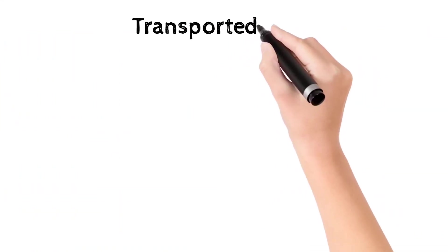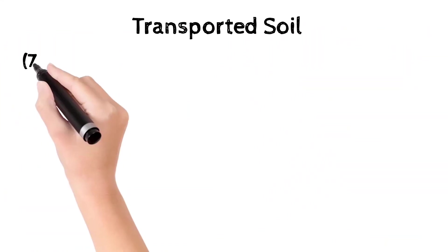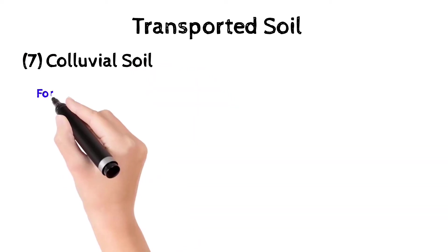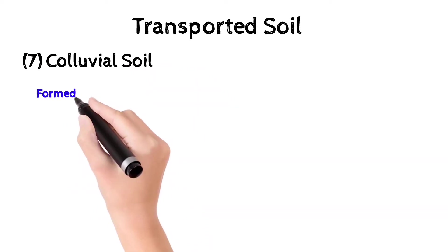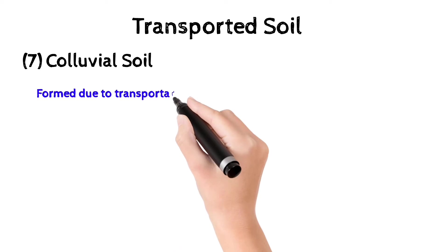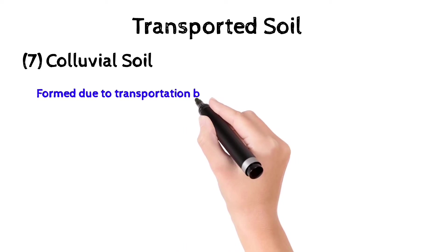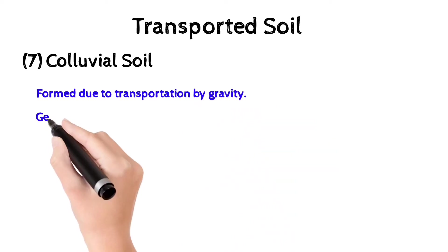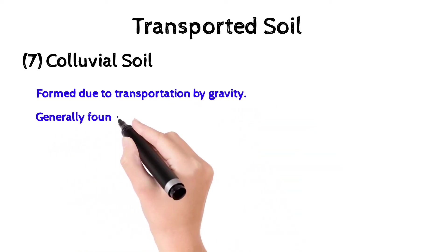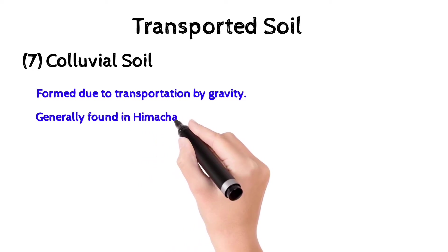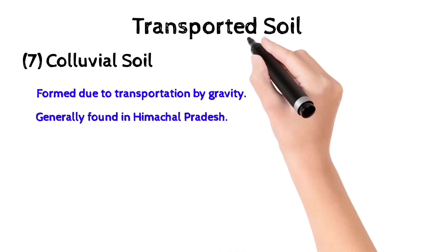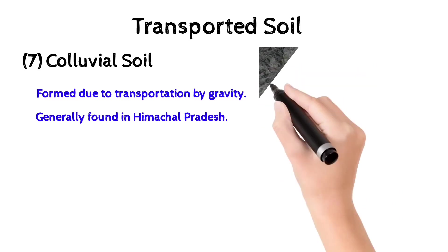The last classification of transported soil is colluvial soil. It is formed due to transportation by gravity and is generally found in Himachal Pradesh. Let's see how it is formed through pictures and videos.